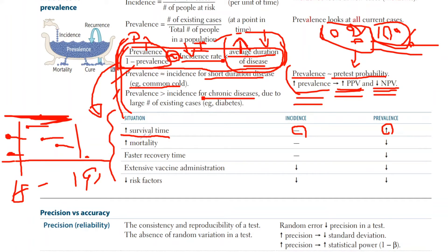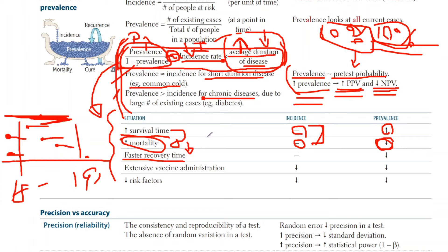If you increase mortality, you will decrease prevalence, but incidence will stay the same. Increasing mortality is basically decreasing survival time, so it's the exact opposite effect. Similarly, a faster recovery time shortens how long a person has the disease — so it's similar to decreasing survival time, which also decreases prevalence.